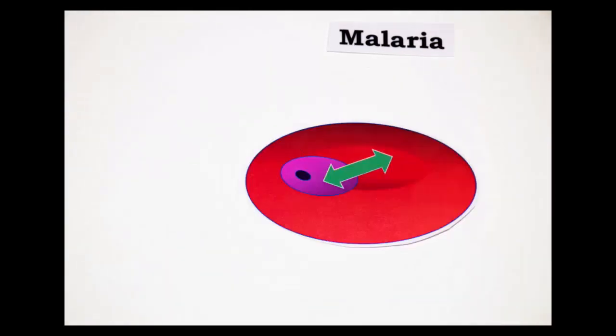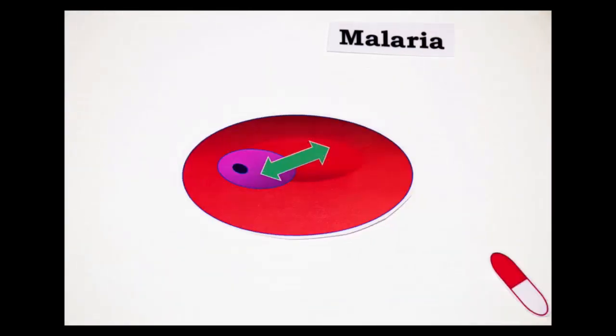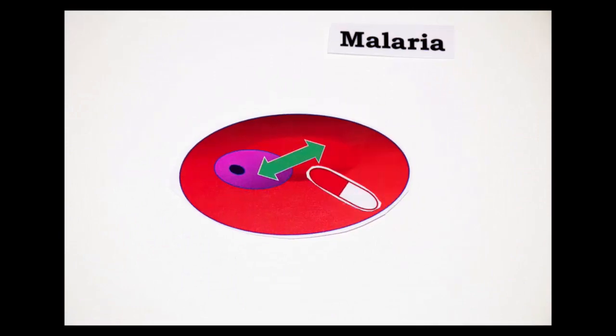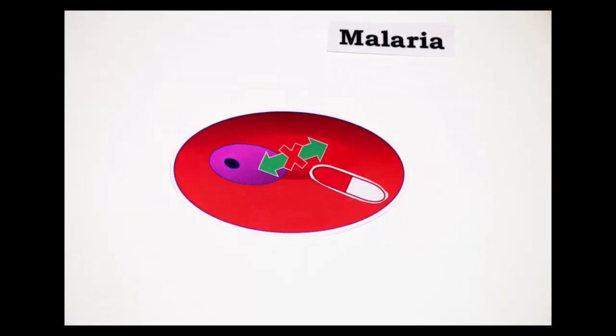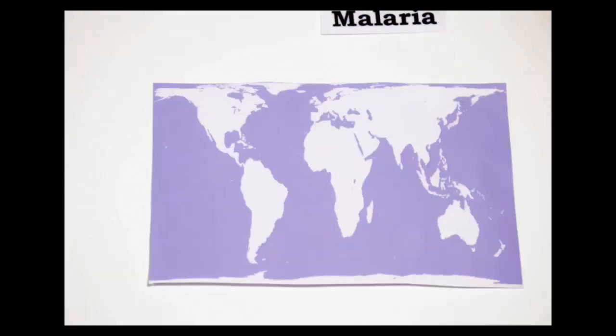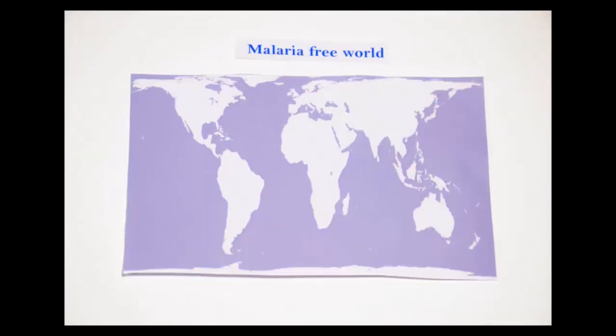The long-term goal is to identify how to interfere with these communications and therefore kill the parasite by targeting the red blood cell. This would make it much more difficult for the parasite to develop resistance and hopefully work towards a malaria-free world.